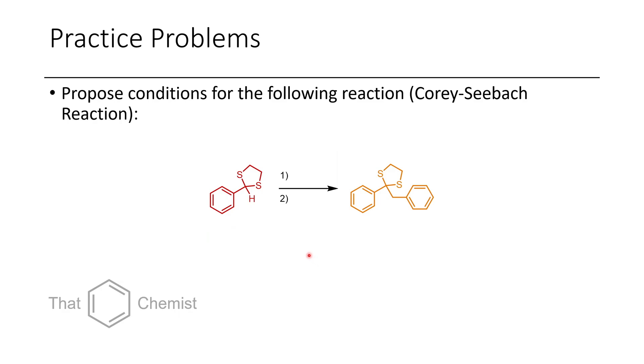In this final example, I've shown an example of the Corey-Seebach reaction, which is a very useful reaction in organic synthesis. I want you to propose conditions that would convert this dithiane, this dithioketal, or dithioacetal rather, into this dithioketal product. With that, I hope this has been a really useful lecture for you on lithiation reactions and the reactivity of organolithiums.